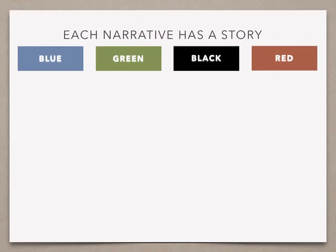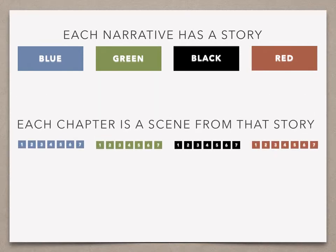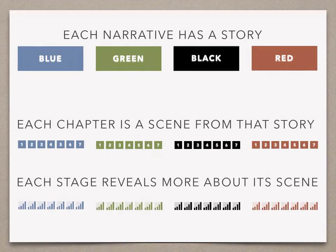Each tells the story of a different character. Each narrative is made up of seven chapters, and each chapter is a scene from its story. Each chapter has four stages, which sequentially reveal more about its scene. The blue narrative tells the story of Emily St. Cloud. Emily is grieving for her dead father and tells us of her youth, her experience with psychotherapy, her visions, and her film career.